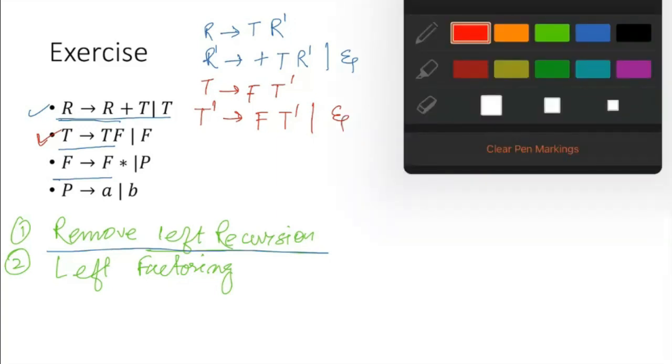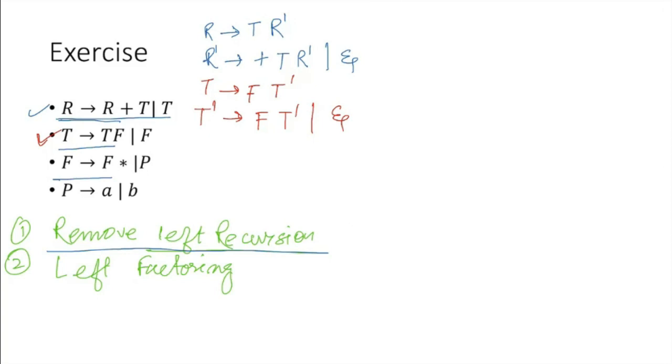Next, I have another production rule set which is having left recursion, that is F to F star P. So that can be again rewritten as F to P F dash, and F dash to star F dash or epsilon.